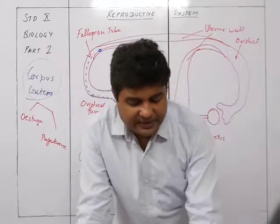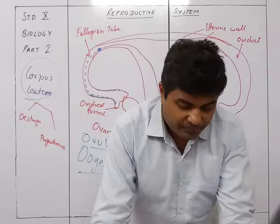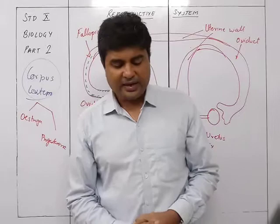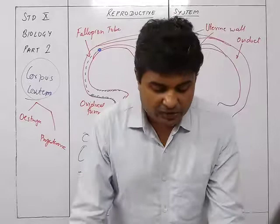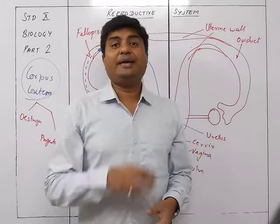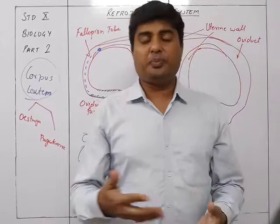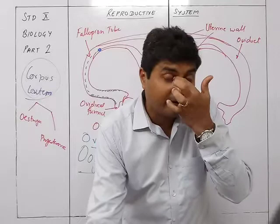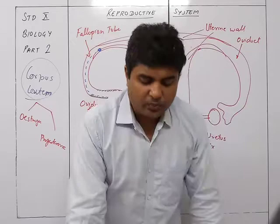In boys, puberty takes place around age 11 to 15. The testes start producing testosterone, resulting in the development of secondary sexual characteristics: deepening of the voice, growth of the testes and penis, growth of hair on the chest, in the pubic region, armpits, chin, and upper lip — moustache, etc.